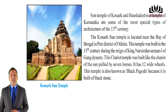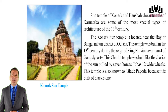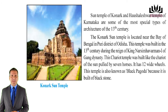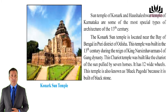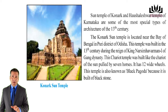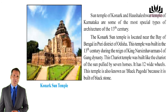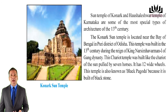The Sun Temple of Konark and the Hoysaleshwar Temple of Karnataka are some of the most special types of architecture of the 13th century. The Konark Sun Temple is located near the Bay of Bengal in the Puri district of Odisha. This temple was built in the 13th century during the reign of King Narasimha Varman I of the Ganga dynasty. This chariot temple was built like the chariot of the sun pulled by seven horses. It has 12 wide wheels. This temple is also known as the Black Pagoda because it is built of black stone.